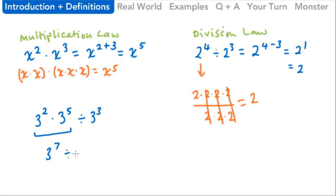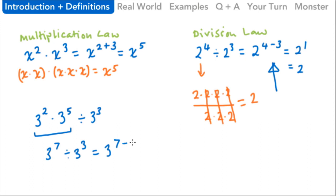Now we're left with three to the seventh divided by three to the third power. The division law tells us that when dividing numbers with the same base, we subtract the second exponent. So this becomes three to the seven minus three, which equals three to the fourth power. That's our answer.